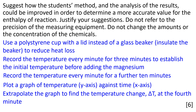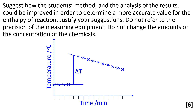Let's address the question. Use a polystyrene cup with a lid instead of a glass beaker — this will reduce heat loss. Record the temperature every minute for 3 minutes to establish the initial temperature before adding the magnesium. Record the temperature every minute for a further 10 minutes. Plot a graph of temperature against time. Extrapolate the graph to find the temperature change, delta T, at the 4th minute. As well as describing the graph, draw a sketch — this will make it clear to the examiner what you are trying to explain.